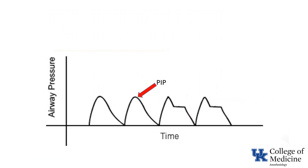Now back to the airway pressure-time curve. As previously noted, this graph shows the inspiratory pause being added at the end of inspiration with an apparently unchanged fresh gas flow rate, as evidenced by the fact that the peak inspiratory pressure is unchanged after the addition of an inspiratory pause. Note that with the addition of the inspiratory pause, a new airway pressure — the plateau pressure — can be determined. This is commonly measured immediately before the ventilator cycles to exhalation.